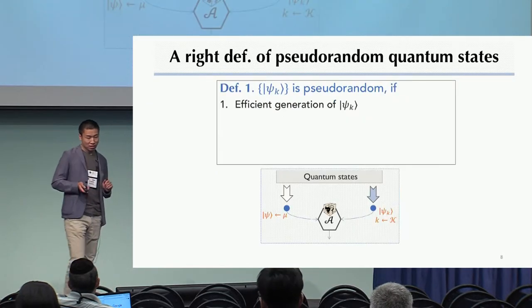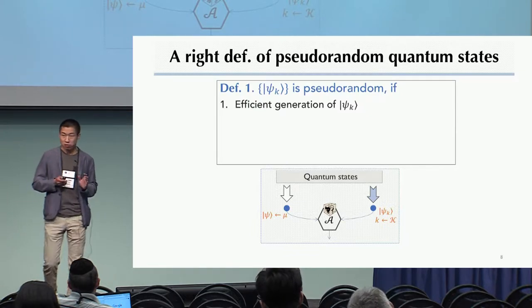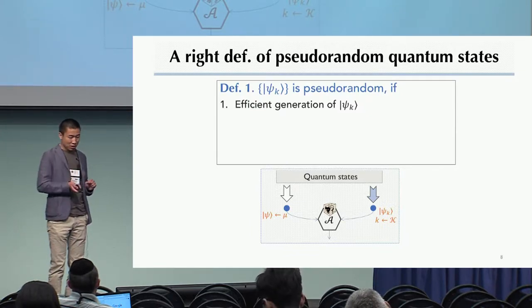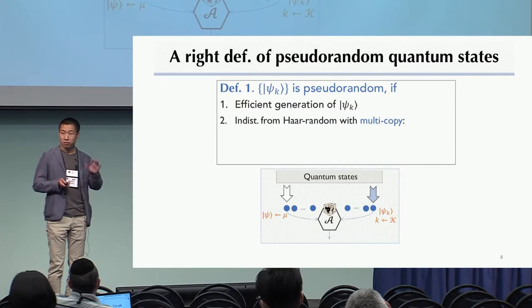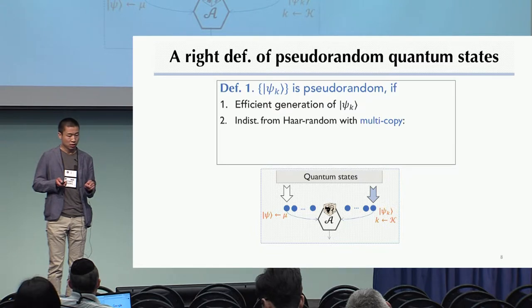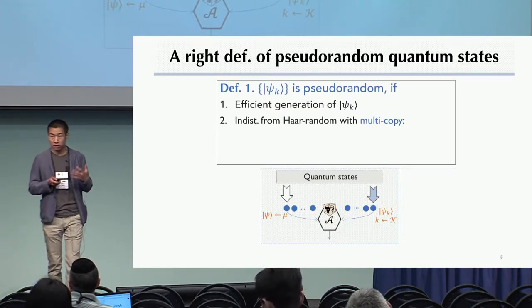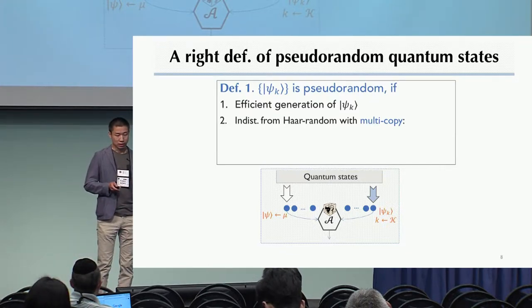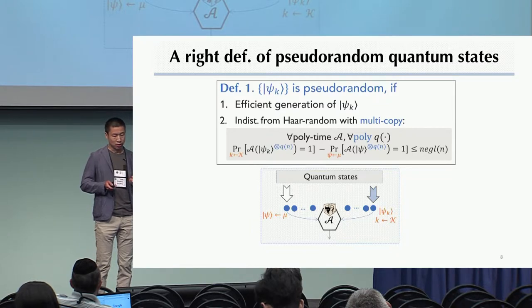So instead, the definition we propose, which we think is the right one, we explicitly give the observer multiple copies of the sample. And in fact, any polynomially many samples, and we ask indistinguishability to hold in this setting. This is what we call a pseudorandom state.